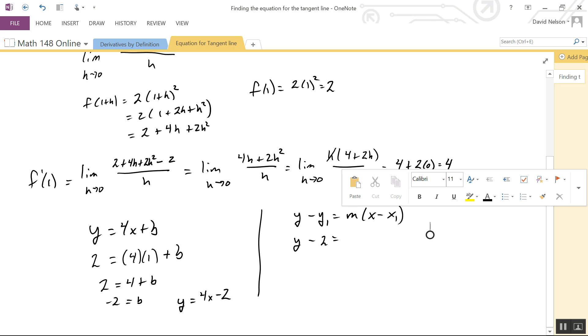y₁ is the y-coordinate of your point, which is 2. m, which I found previously, is the derivative, which is 4. And x₁ is the x-coordinate of the point, which is 1.